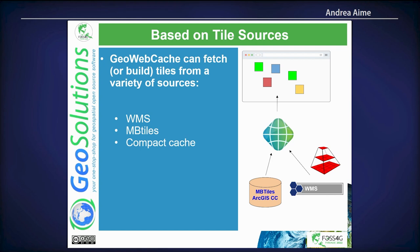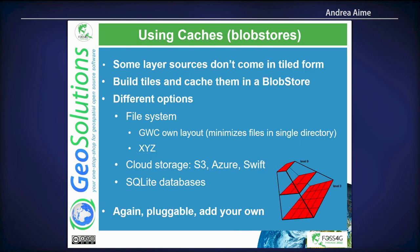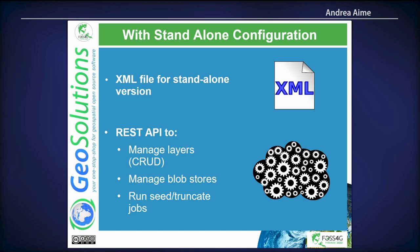GeoWebCache is based on a variety of tile sources such as WMS, MB tiles, compact cache, and more. Some tile sources are not tiles themselves, like WMS, so we need to store the tiles somewhere through an interface called the BlobStore, with options like file system, cloud storage, and SQL databases. Configuration of standalone GeoWebCache is based on an XML file, but it also has a REST API to add layers, remove layers, control grid sets, configure disk quota, and so on.